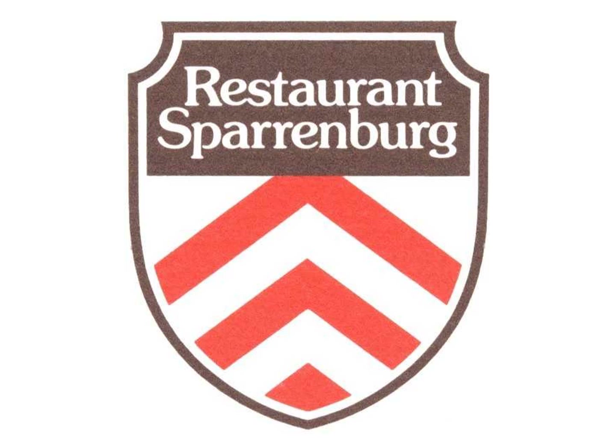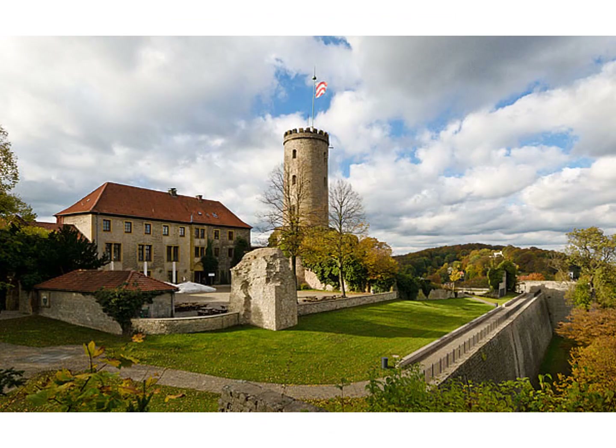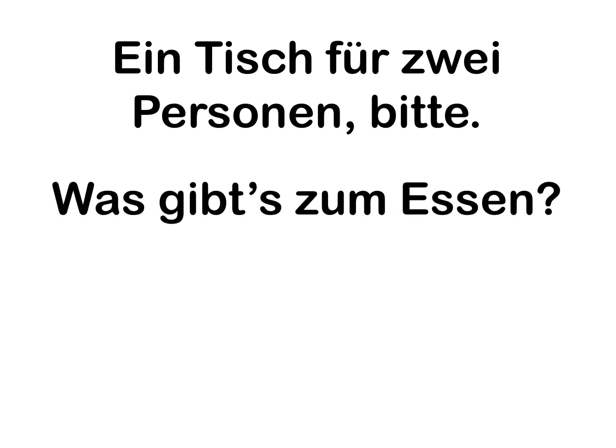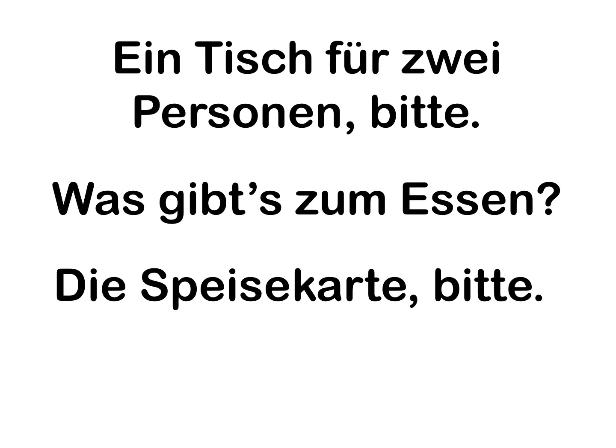Next we're going to go im Restaurant — we're going to go to the restaurant. We made a visit to my cousin's restaurant in Germany, the Restaurant Sparenburg. That was a picture of the Sparenburg, the fortress that sits on the hill overlooking the city of Bielefeld in Germany. At the restaurant we have to ask for a table. In German we say: ein Tisch für zwei Personen, bitte — a table for two people please. We might ask was gibt's zum Essen? — What is there to eat? And the server will bring you a die Speisekarte — the menu. So we would ask: die Speisekarte, bitte.